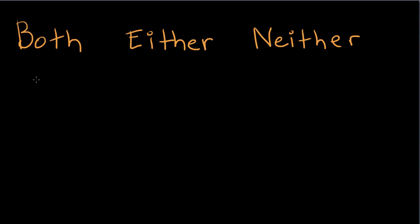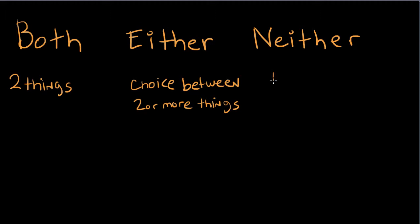So when we use both, we want to talk about two things. When we use either, we also want to talk about two things with a choice, a choice between two things, two or more things. And when we talk about neither, we mean that there are no choices that we like.